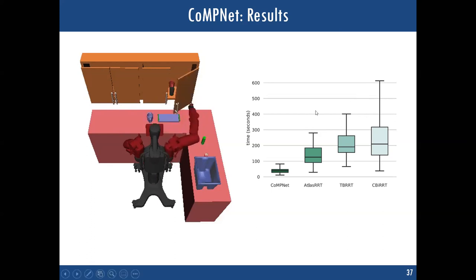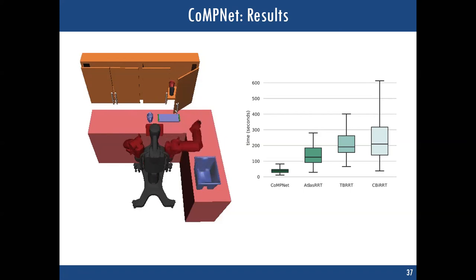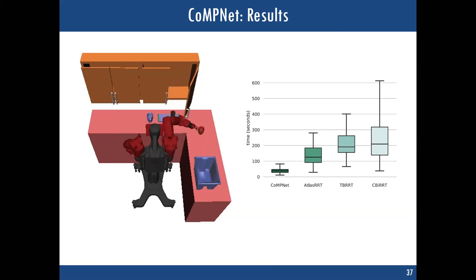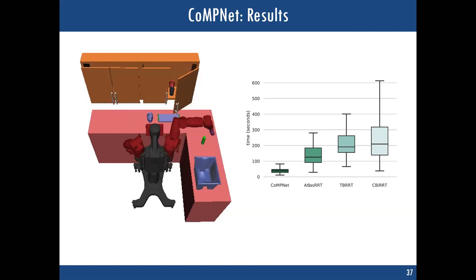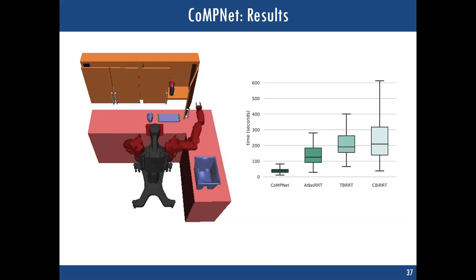[Q&A] On why OpenRAVE was used rather than PyBullet or similar: CBiRRT was the available constraint planning implementation at the time and it was in OpenRAVE. However, MPNet has already been integrated into OMPL and can be used with any OMPL planner — though the demo still uses OpenRAVE, it demonstrates easy integration. This should be available publicly in a couple of months.